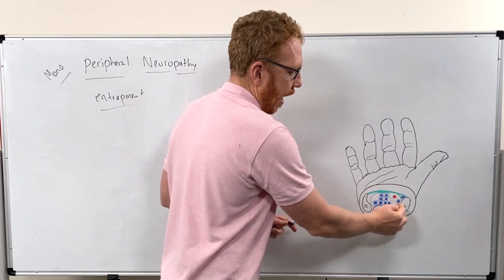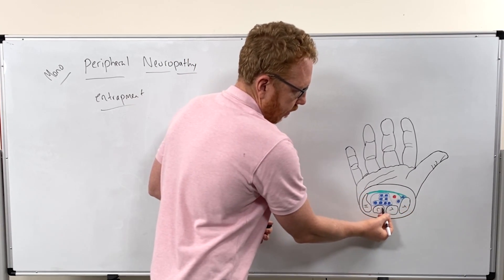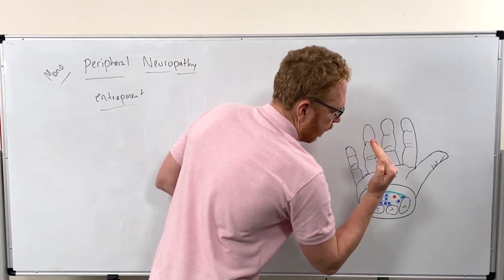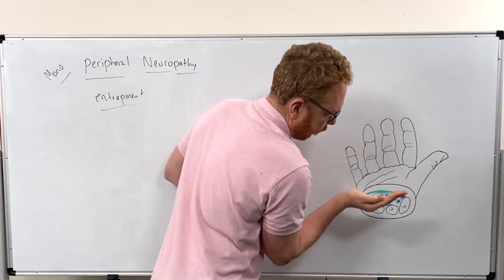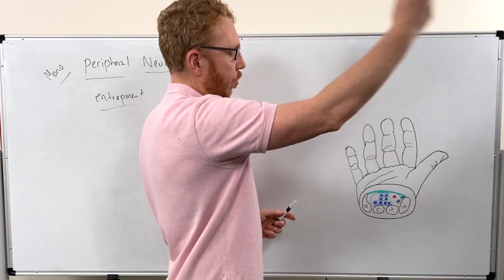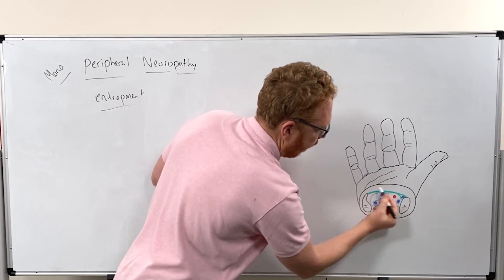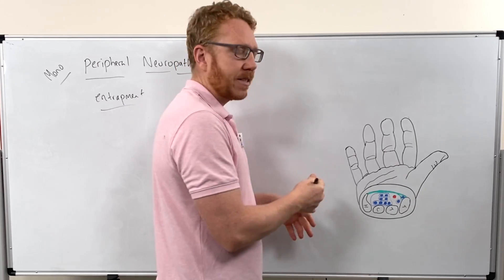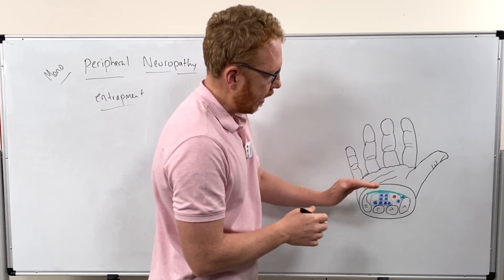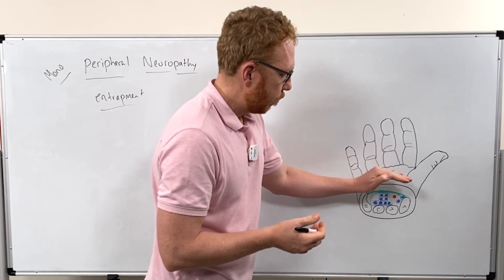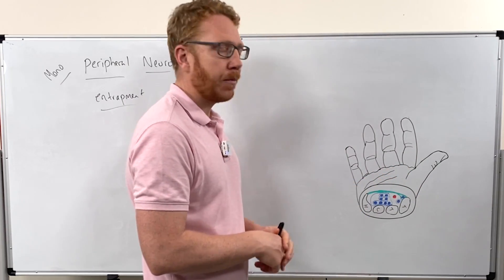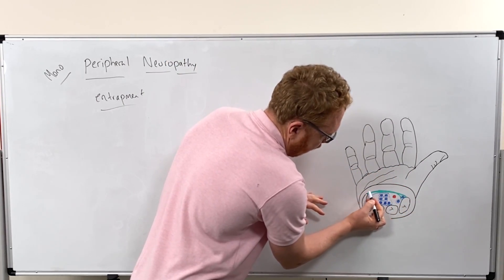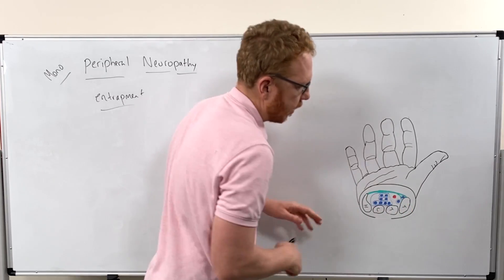So we've got the lateral border, the medial border, and the posterior border. What about the roof? That would be the flexor retinaculum, also called the transverse ligament — a connective tissue roof on top of the carpal tunnel. Now we have the tunnel itself.